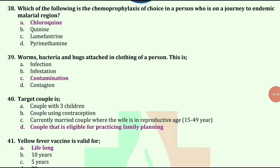Which of the following is the chemoprophylaxis of choice in a person who is on a journey to an endemic malarial region? Answer is chloroquine.